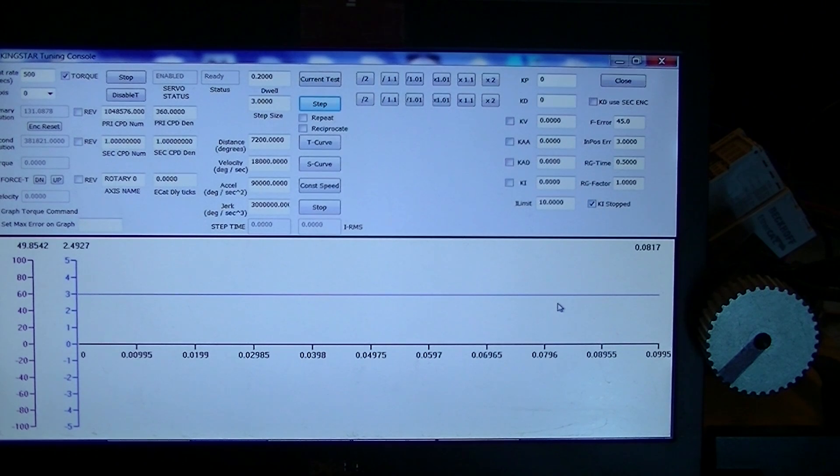What you want your actual position to do is quickly start out from here and quickly approach the three degrees, overshoot a little bit, and then quickly settle out. As you can see, all our parameters are zero, so nothing's going to happen.